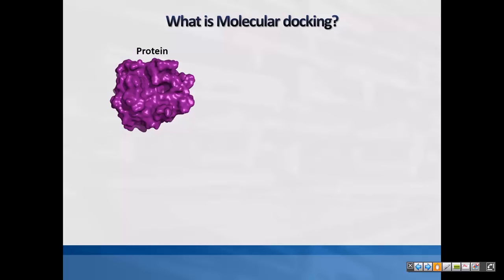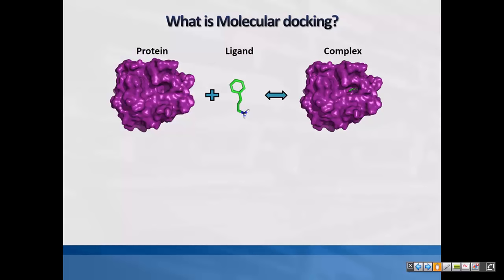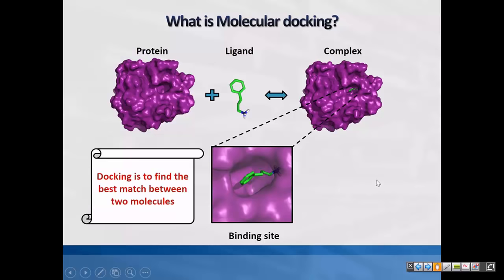For example, we have an enzyme and a ligand, and the major thing we want to know is how they interact and their positioning. Once you apply a molecular docking procedure, the molecule tries to find the appropriate site over the enzyme — taking into account the active site, allosteric sites, and the interactions it could make with the receptor. In simple terms, we are trying to find the best match between two molecules.